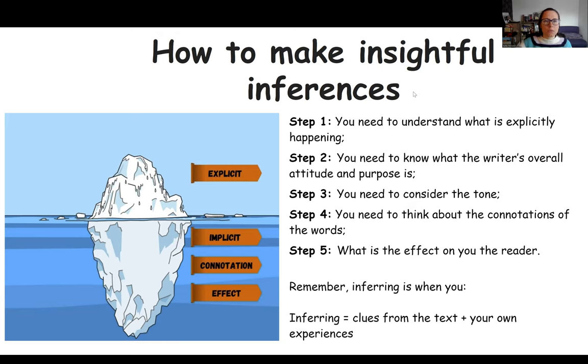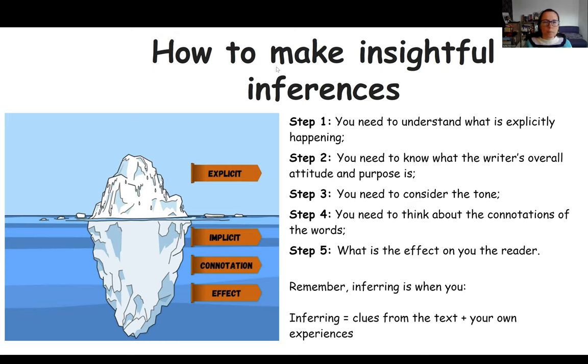So let's put this into practice with this first task. This is from a language paper two. So what can we infer from this extract? Of course you would want to make sure that you read what the passage is about and read everything. But let's just look at this to show you how you can infer. So what was not known, however, was that the newest tip, number seven, was a killer with a rotten heart. It had been begun in Easter 1958 and was built on a mountain spring, most treacherous of all foundations. Gradually over the years, the fatal seeping of water was turning tip seven into a mountain of moving muck.